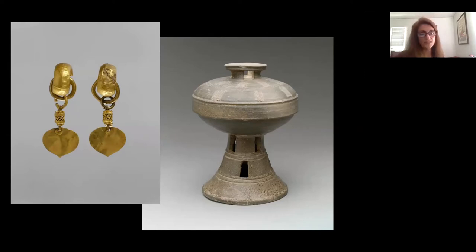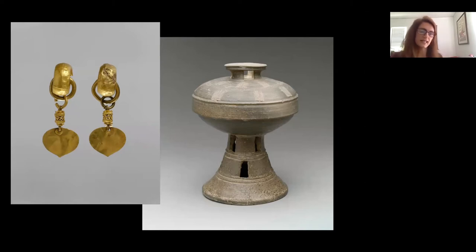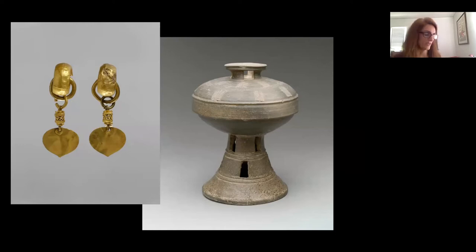I'm starting here with a couple of images from the Three Kingdoms period — roughly the first century BC to 668 AD — when the Korean Peninsula was divided into Koguryo in the North, Paekche in the Southwest, and Shilla in the Southeast. These two images are of objects from tombs from the Shilla Kingdom, and they date to the fifth and sixth century AD.